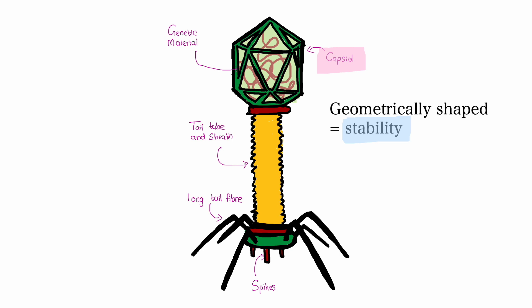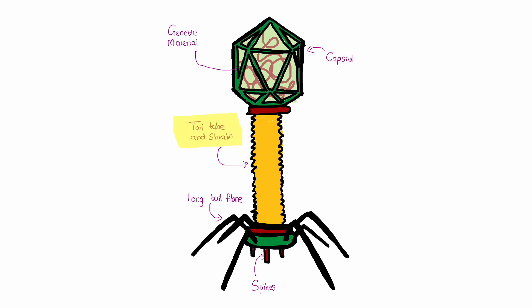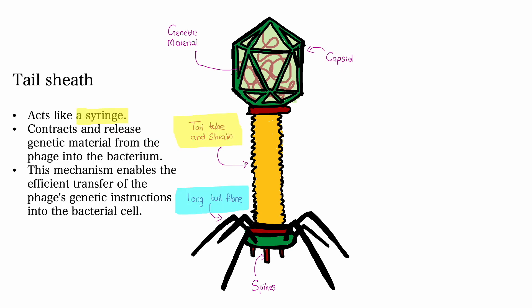In addition to the capsid, bacterial phages possess a tail sheet and tail fibers. The tail sheet acts like a syringe, contracting and releasing the genetic material from the phage into the bacterium. This mechanism enables the efficient transfer of the phage's genetic instructions into the bacterial cell.